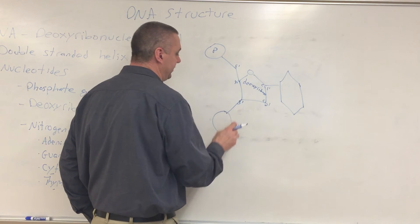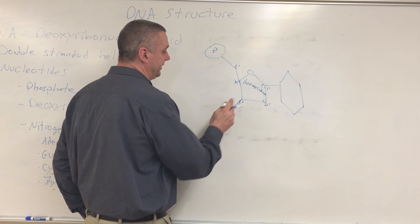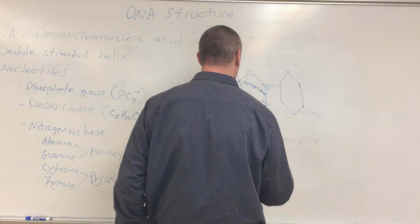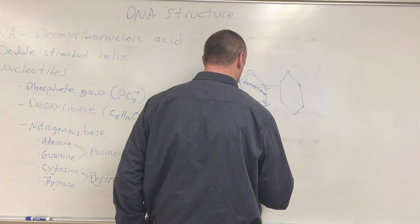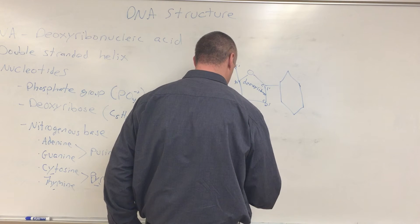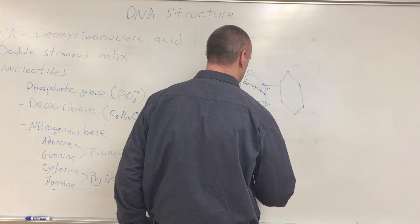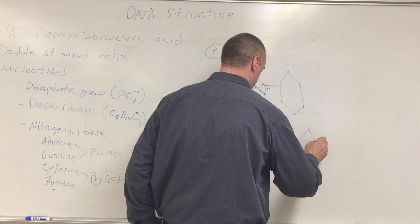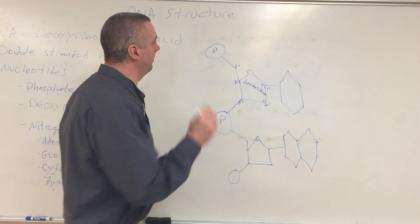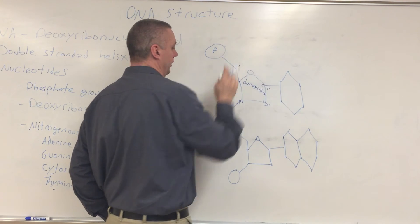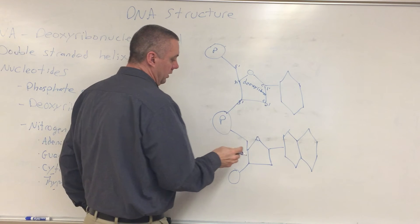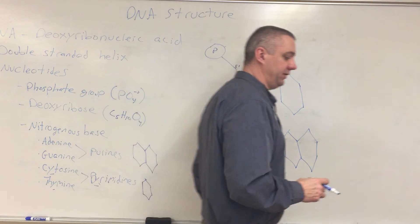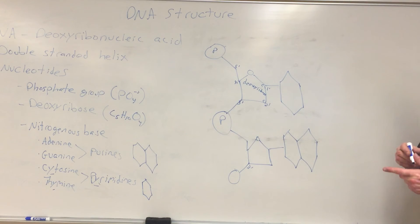And for the purposes of our class, we don't really care where it's attached to any nitrogenous base. Let's make it attached somewhere. So this is one nucleotide. When we add these nucleotides together to make one strand of DNA, the phosphate group is going to be attached to the three prime of the other nucleotide.